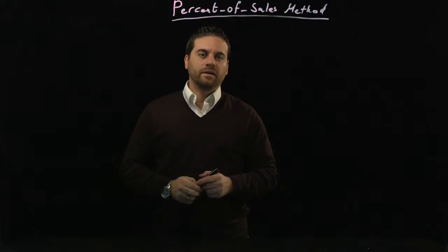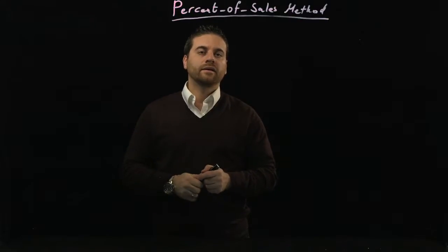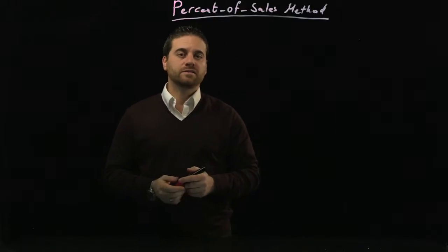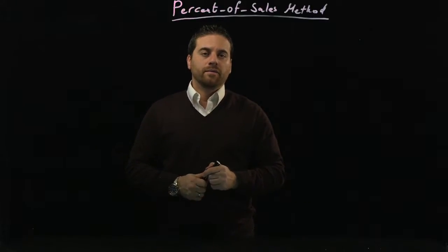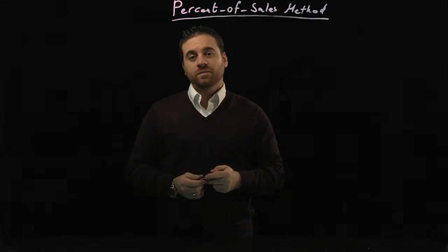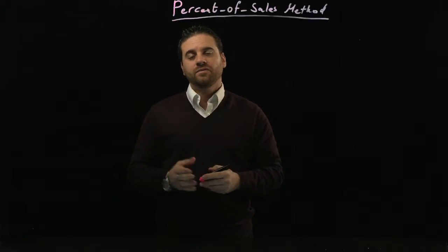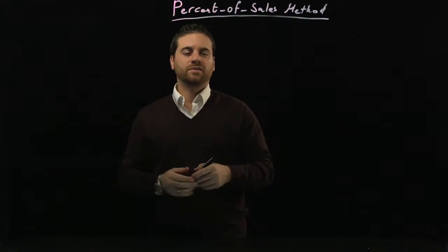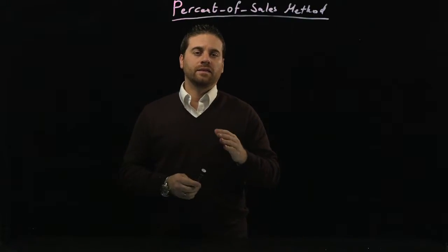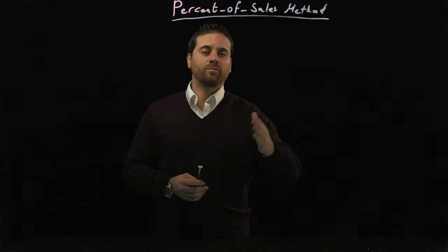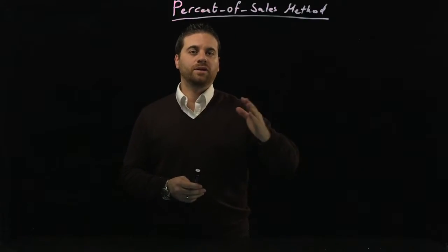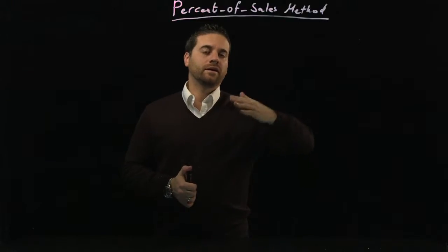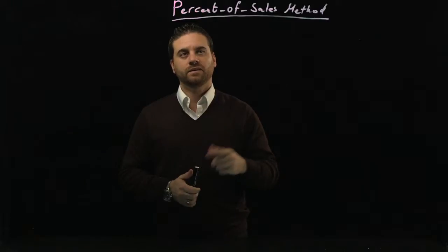In this video, we will talk about the allowance method in writing off bad debt expenses. In the previous video, we spoke about the direct method. The difference between the direct method and the allowance method is that with the direct method, we waited until we gave up waiting for the amount to be paid. We didn't write off the amount at the beginning — only at the end when we knew it's not going to be collected.